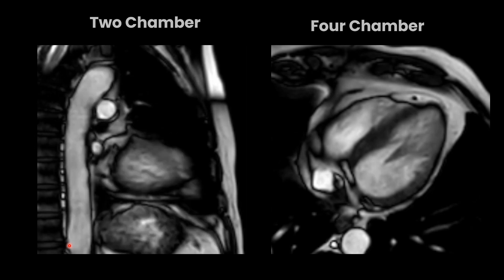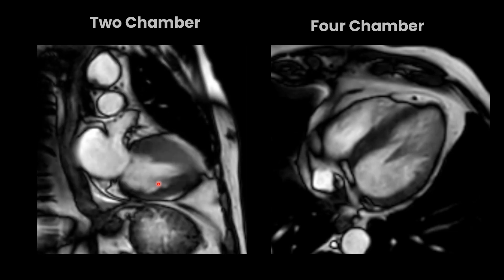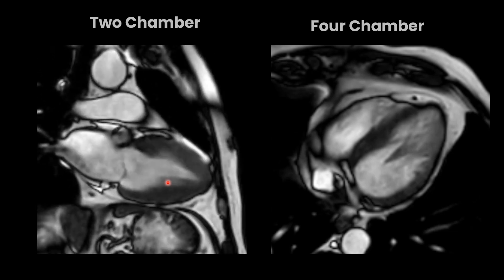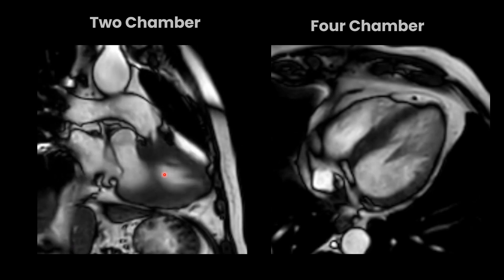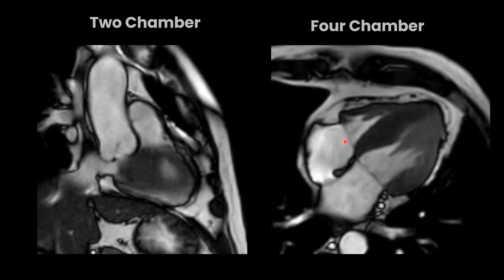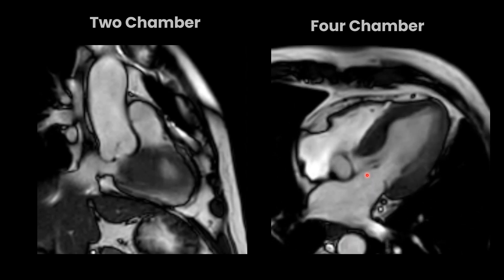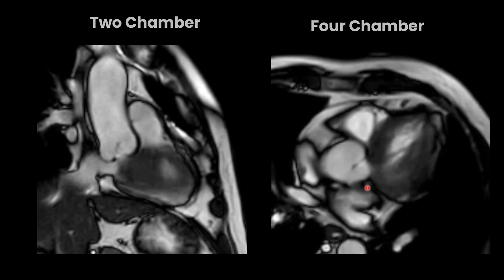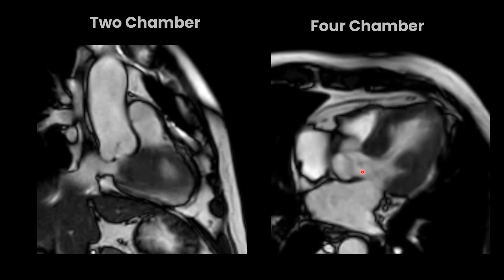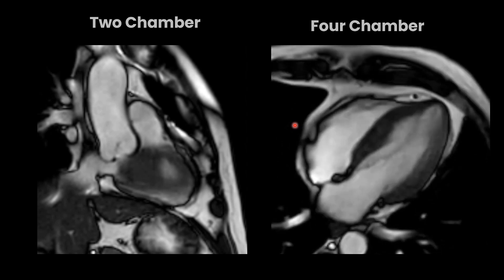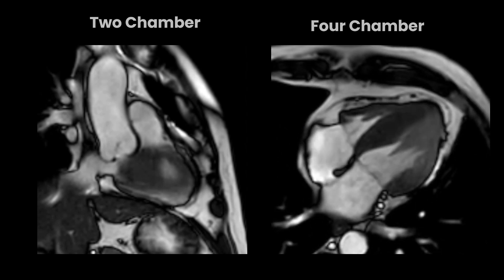This is the two-chamber view where we are able to see the left atrium, left ventricle, and mitral valve, along with papillary muscles and movement of blood, which is beautifully seen. This is the four-chamber view again showing right atrium, right ventricle, left atrium, left ventricle, mitral valve, tricuspid valve, aortic valve, and mitral valve continuity with jets of blood. These are the three important views: two-chamber, four-chamber, and short axis.